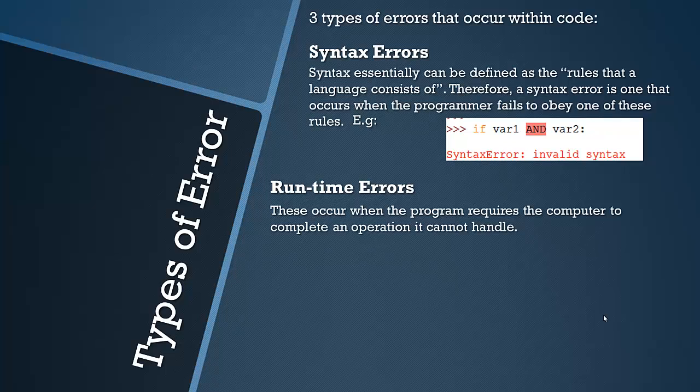Runtime errors often occur when a computer takes a long time to evaluate something or run a section of code. Because computers are so advanced and efficient today this rarely happens, and I'm not going to do an example because I don't really want my computer to crash — crashing and freezing is a consequence of runtime errors. They come under many different types and many reasons can link to them. For example, if a computer has to multiply two extremely long numbers while doing something else it may struggle and crash.